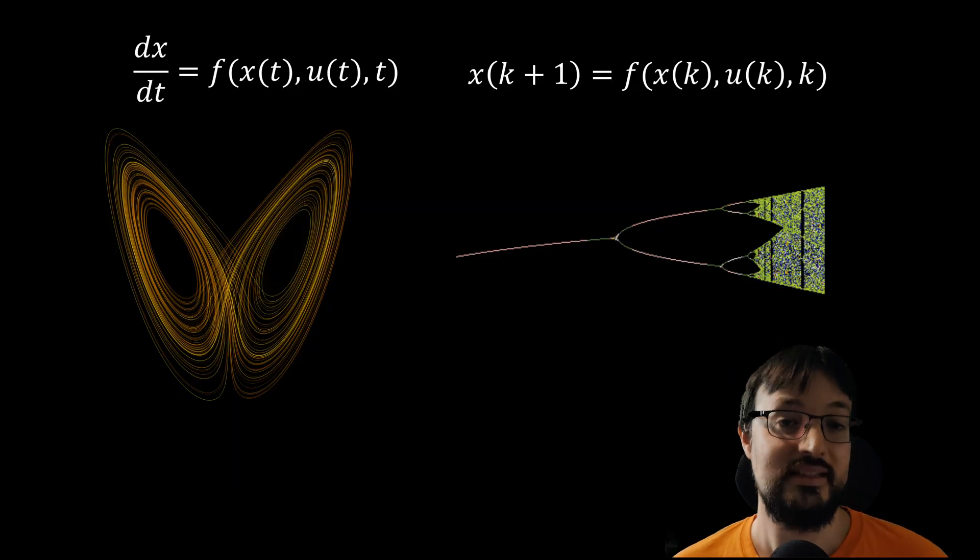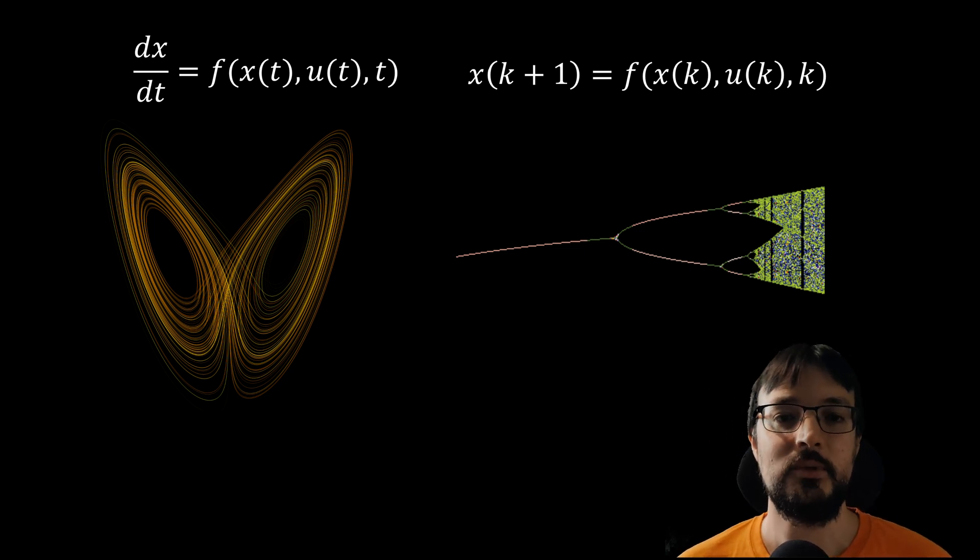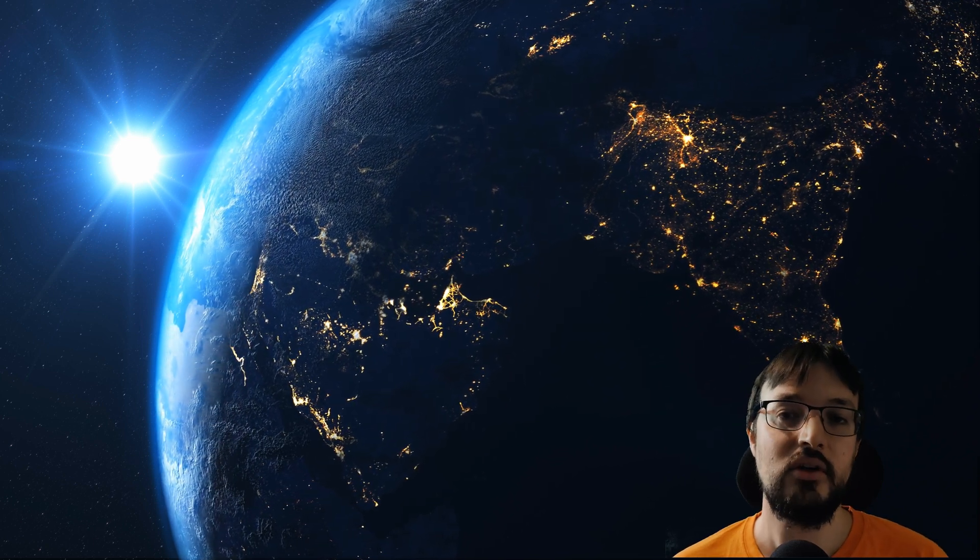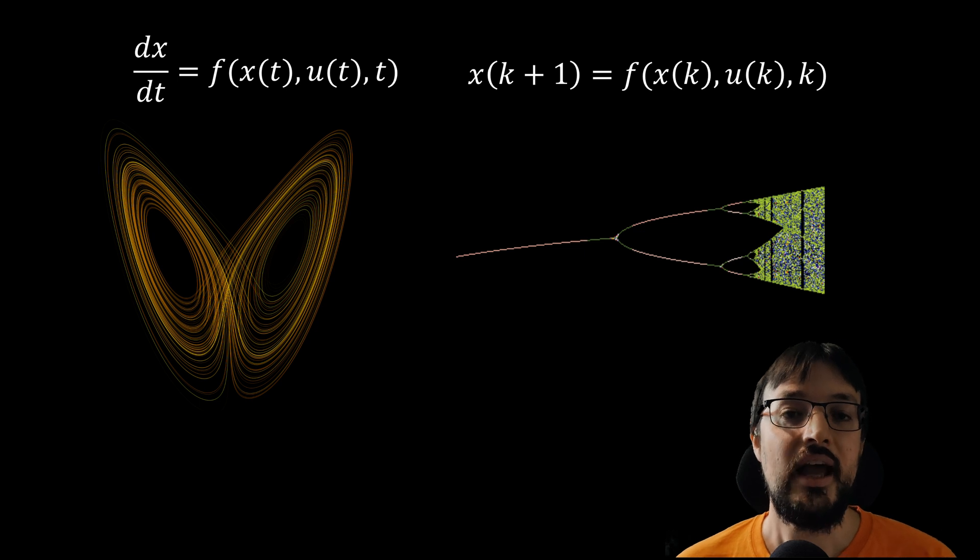So let's start. We're going to construct a dynamical system. So what is a dynamical system? A dynamical system is a mathematical model used to describe how quantities evolve over time based on a set of rules or equations. Now think a moment about this. Almost everything in the universe evolves over time. This means that dynamical systems are an extremely powerful mathematical modeling framework that can represent an incredible amount of processes. Dynamical systems are widely used in physics, biology, economics, engineering, and many other fields to model time dependent behaviors.